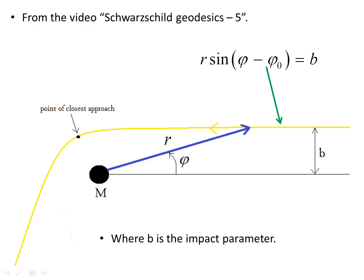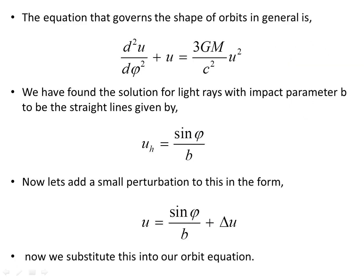In Schwarzschild Geodesics #5, we looked at how light inbound towards a Schwarzschild mass, with an impact parameter B off-center from the mass, could be described. These straight-line light paths were described by an equation relating the distance r from the center of the Schwarzschild mass and the angle φ. The homogeneous solution was U = sin(φ)/B.